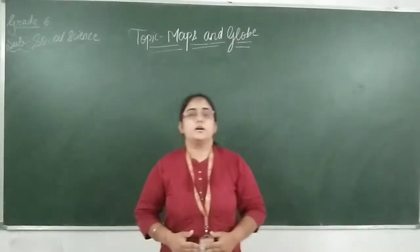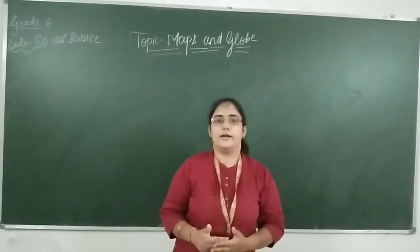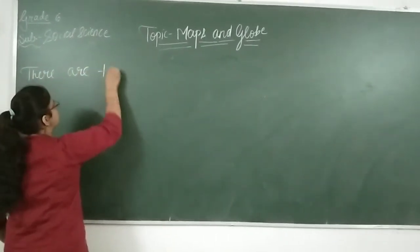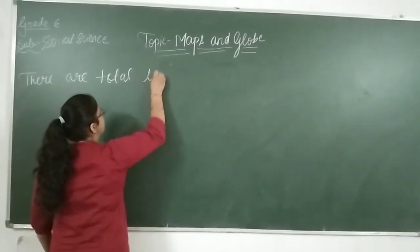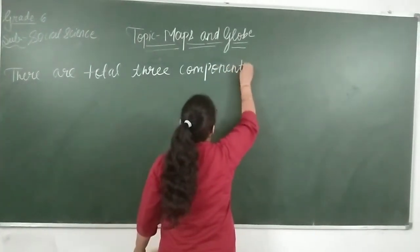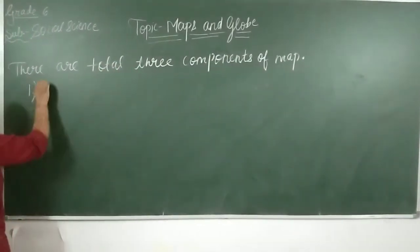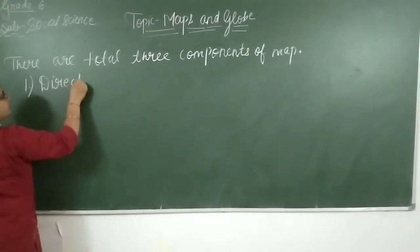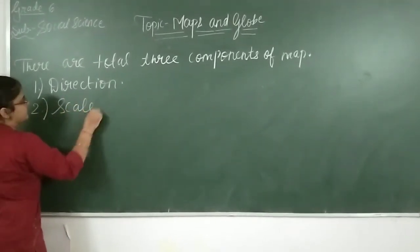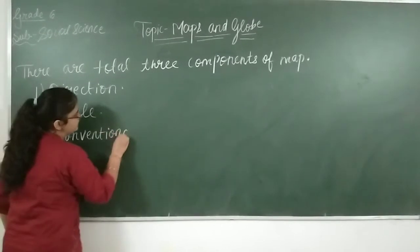Now we will discuss about the components of a map. We already learnt in the previous video how many components of a map there are. There are total three components of a map. First one is direction. Second one is scale. And third one is conventional sign.